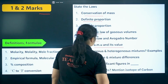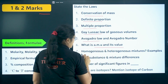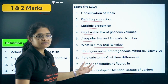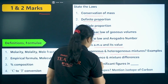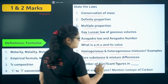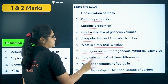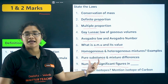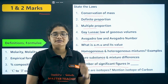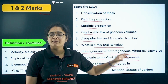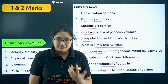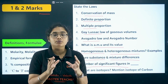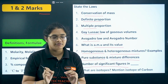Next, what is AMU and its value. Then you have homogeneous and heterogeneous mixtures — their examples you need to know. You should also know the difference between pure substance and mixture — at least three points. The number of significant figures in any given number can be asked in your MCQ section, so you should know the rules to find the number of significant figures.